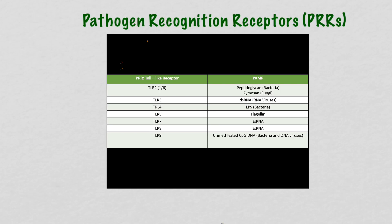What does unmethylated CpG DNA mean? It refers to the methylation of a particular portion of DNA. It's pretty important because both bacteria and viruses have it — and humans don't. So your body can recognize it and mount a response against it. In this way, TLRs cover the full spectrum of pathogens that could invade us and signal to the cell to begin the inflammatory response.